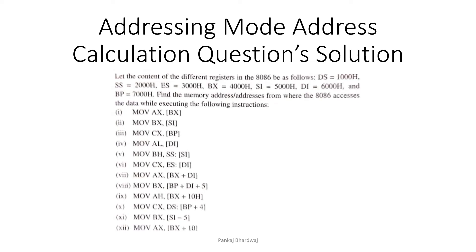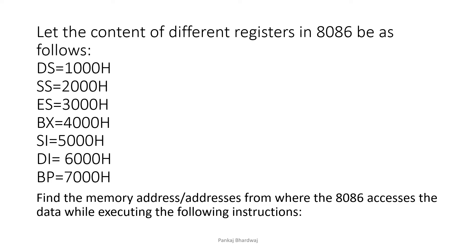This is a question where we need to identify various memory address locations in different segments. Hopefully you have solved it; if yes, you can check the answers, if not you can see how it can be solved. These are the contents of the different registers in 8086: CS, DS, SS, ES — that means data segment, stack segment, extra segment. BX=4000H, SI=5000H, DI=6000H, BP=7000H. We need to find the memory address locations for different types of instructions.